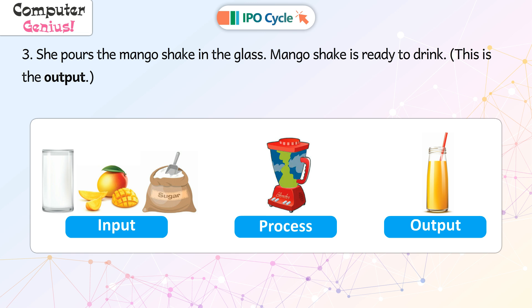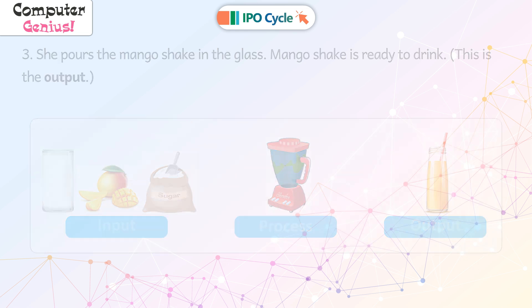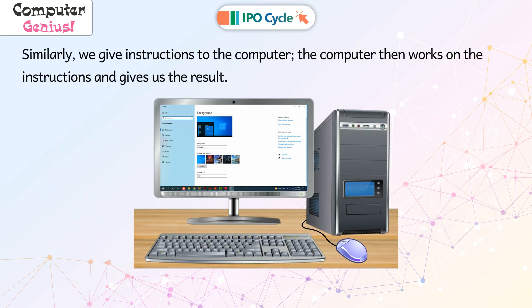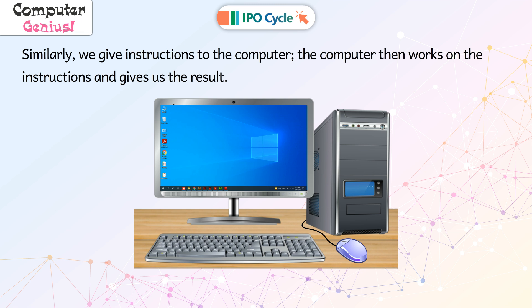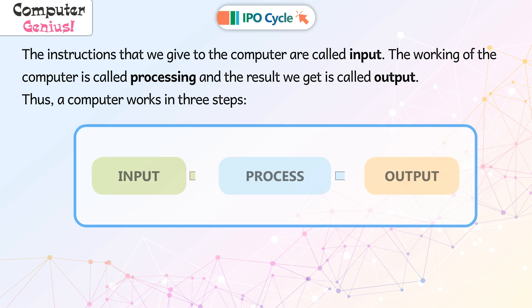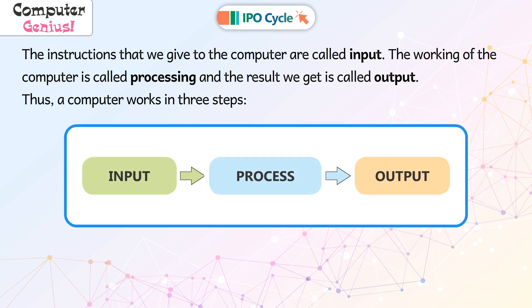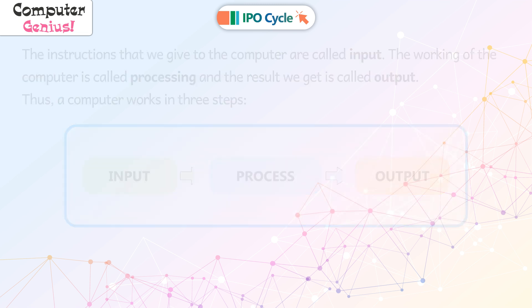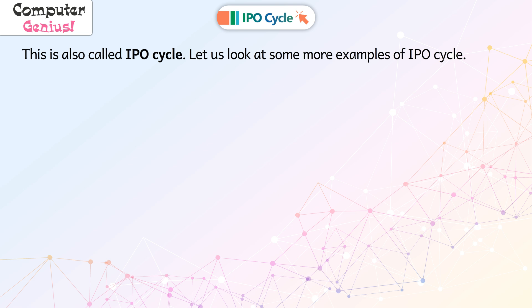Input, process, output. Similarly, we give instructions to the computer. The computer then works on the instructions and gives us the result. The instructions that we give to the computer are called input. The working of the computer is called processing and the result we get is called output. Thus, a computer works in three steps: input, process, output. This is also called IPO cycle.